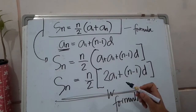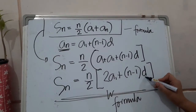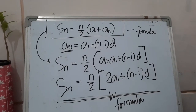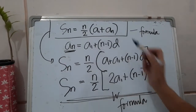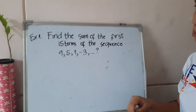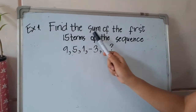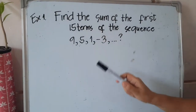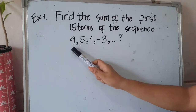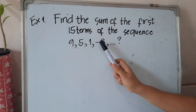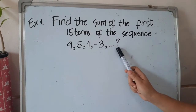We can use this formula if we have a common difference and we don't have the last term. For example, find the sum of the first 15 terms of the sequence 9, 5, 1, negative 3, and so on.